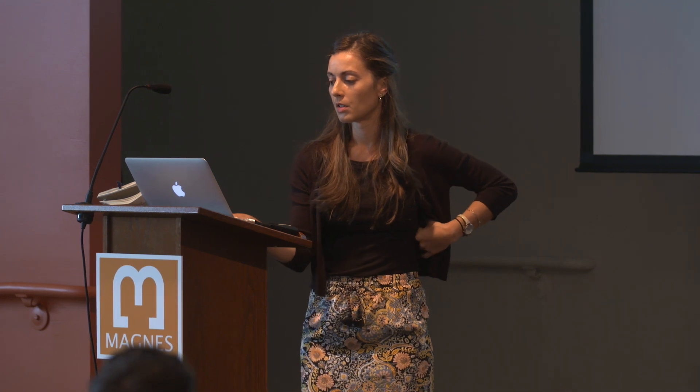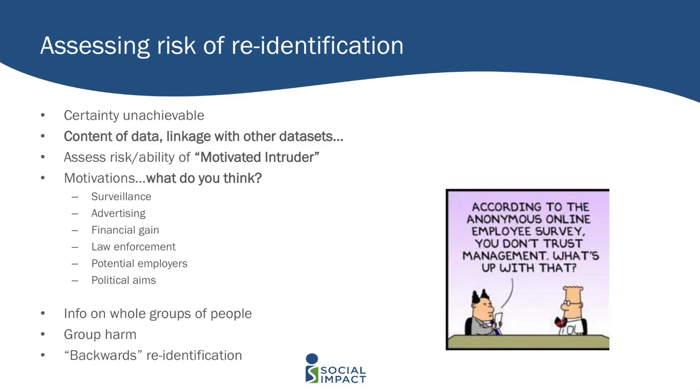You want to assess the risk of re-identification — and certainty is unachievable. You can never guarantee a data set won't be re-identified, but you want to minimize the risk as much as possible. You're thinking about the content of the data and what somebody could use to re-identify within the data itself, and linkage with other data sets. I think maybe the reason we don't have many examples of this happening yet in the development context is probably because there's a small amount of data out there. But I can imagine a case where if 15 or 20 studies all came out and released their data and all took place in the same village, there's probably some way to use all those studies together and figure out who people are.